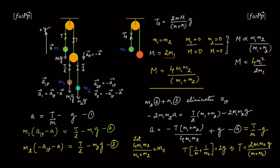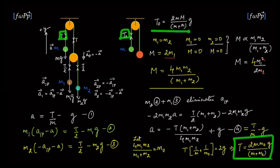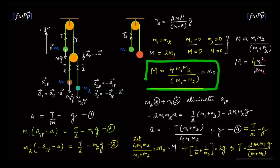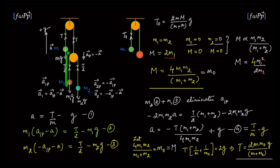So there we have it. Comparing the tension t from our equations to t0 from the equivalent system, they look identical, and therefore m must equal m0. This confirms that m0 = 4·m1·m2 / (m1 + m2), which is the same expression we obtained earlier from the limits method. That is the equivalent mass, and in all future problems, the whole pulley-and-two-mass system can be replaced by a single mass given by this expression.